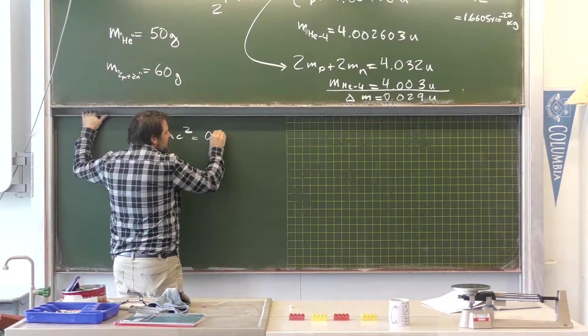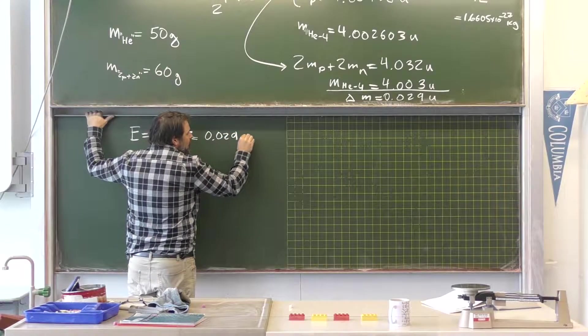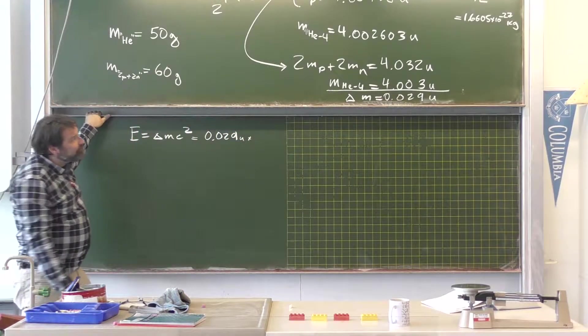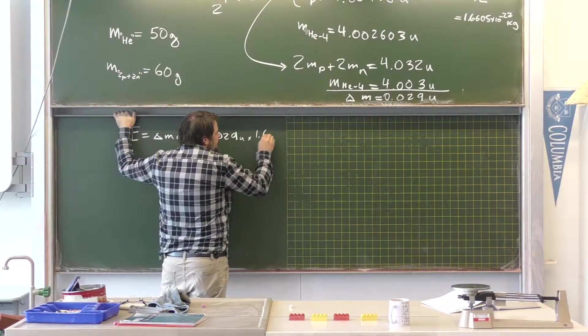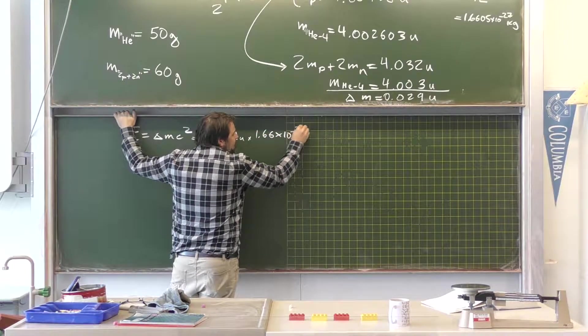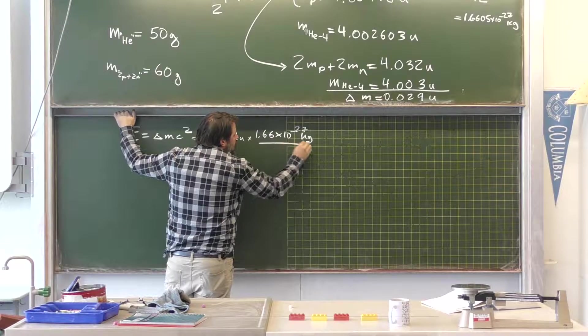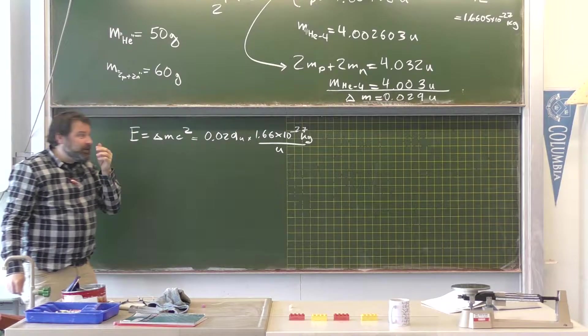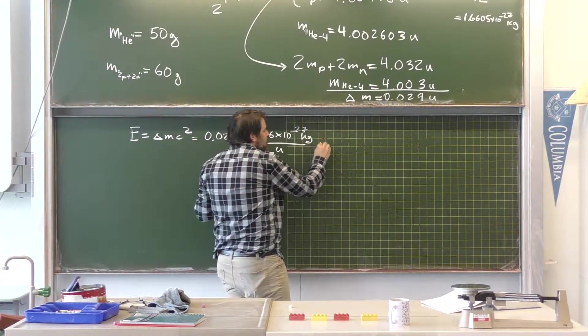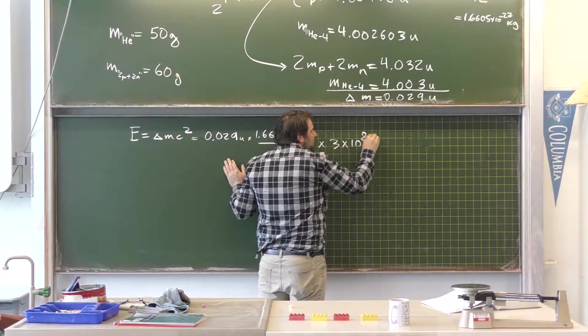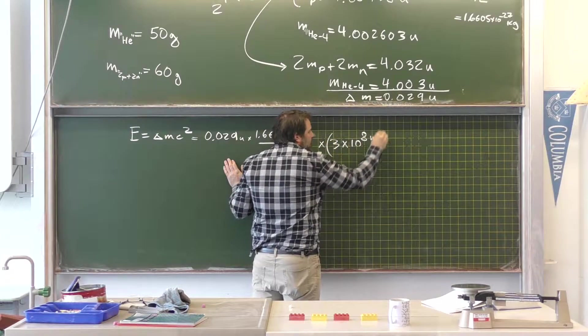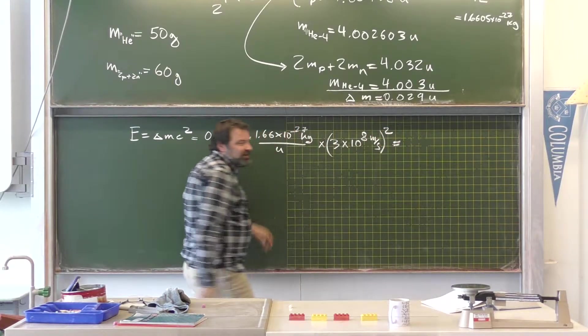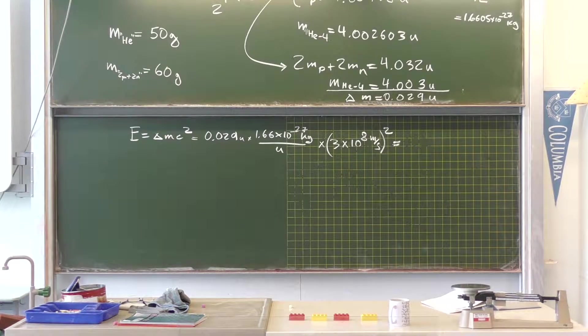Now we're going to have to convert our u's. To kilograms. So let's go 1.66 times 10 to the minus 27 kilograms per u. Then we have the mass in kilograms. And multiply it by 3 times 10 to the 8 squared. Right? And surely we'll get a gigantic number out. Now let's try it. Do you guys have calculators with you? We can figure out the value of how much energy is released in this.